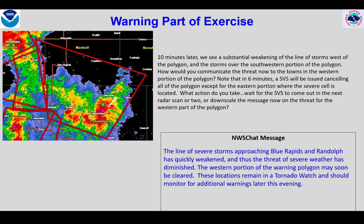Here we see the image 10 minutes later. The Westmoreland storm remains severe as it tracks northeastward. The approaching line of storms west of the polygon, however, has largely fallen apart. After consulting with the warning person, you might mention to core partners that the western portion of the warning is expected to be cleared soon. We can use targeted threat messaging not only to indicate an approaching or intensifying hazard, but also a weakening or dissipated one. That's important information as well.